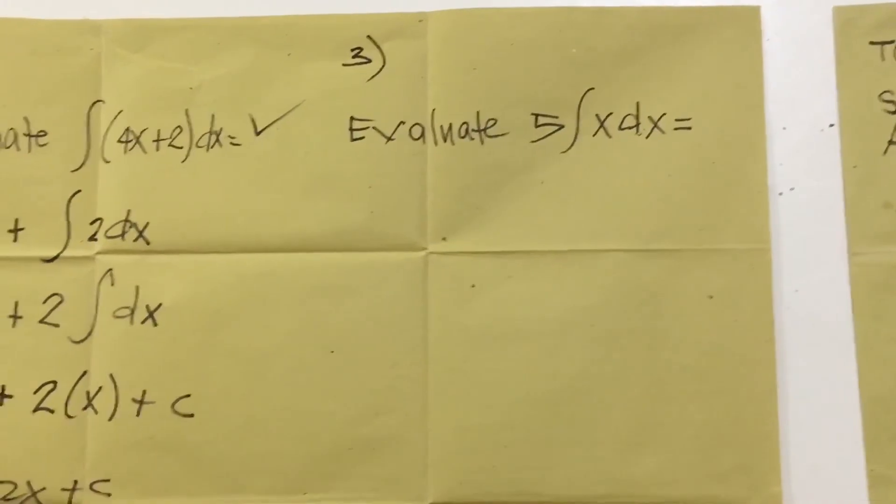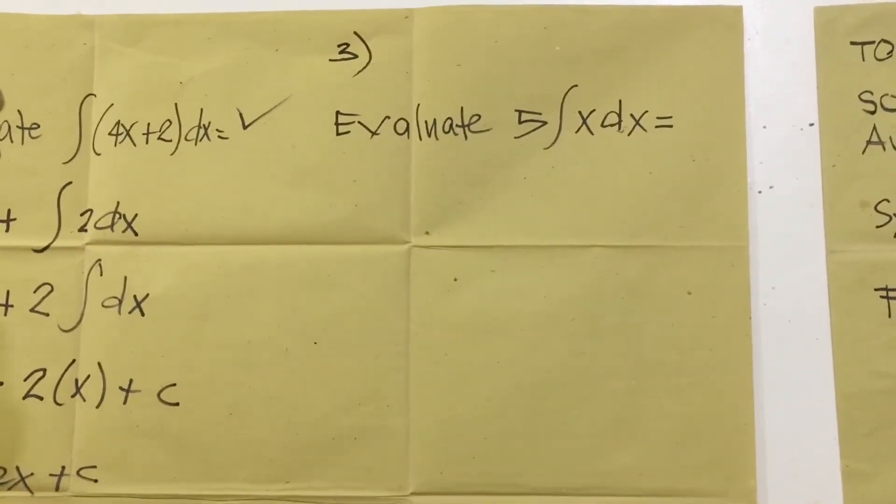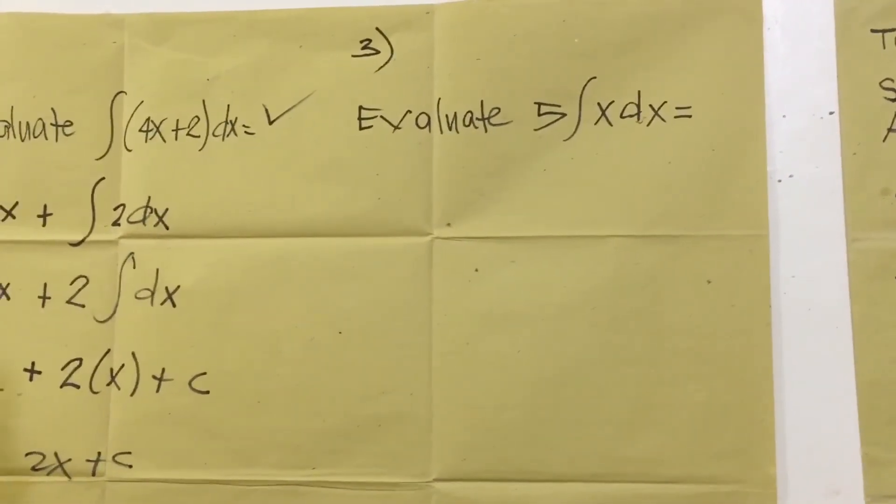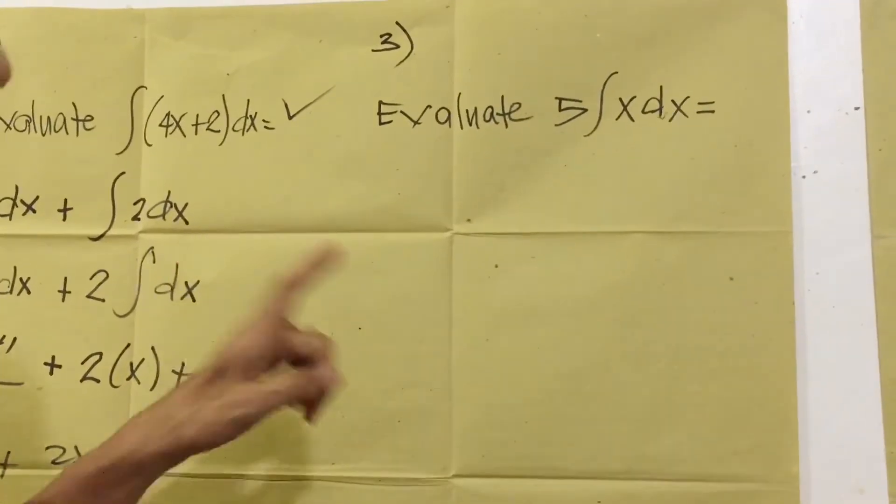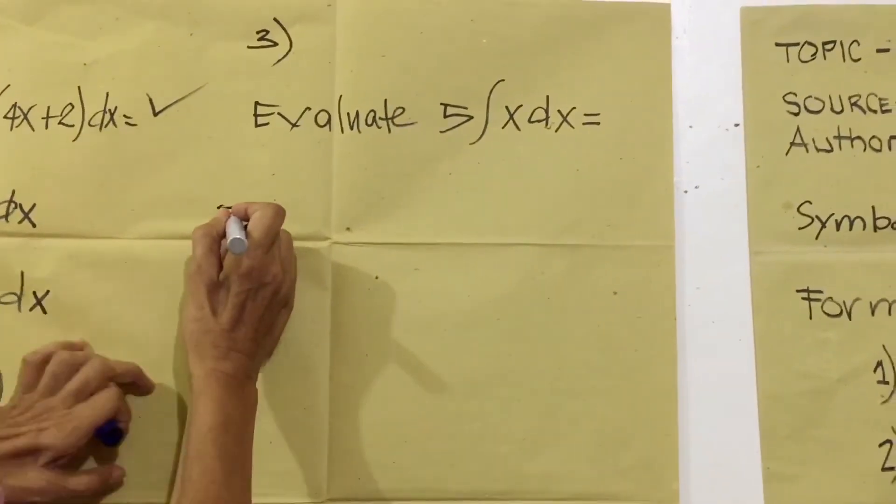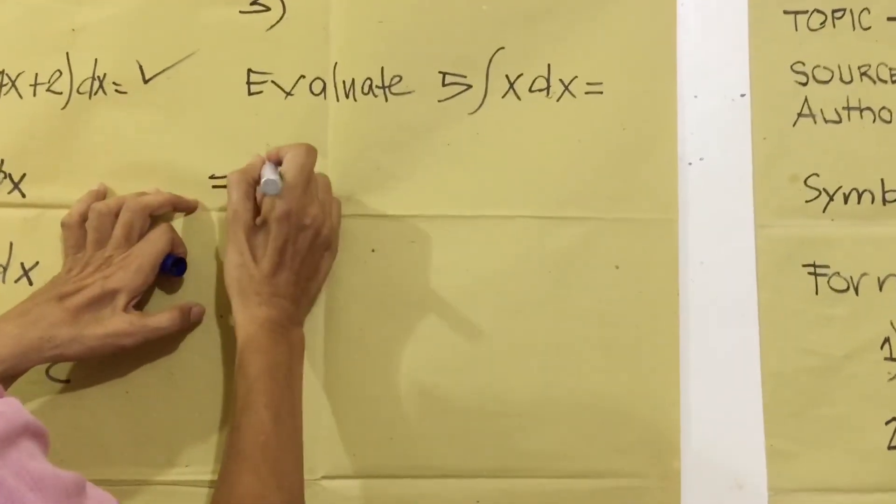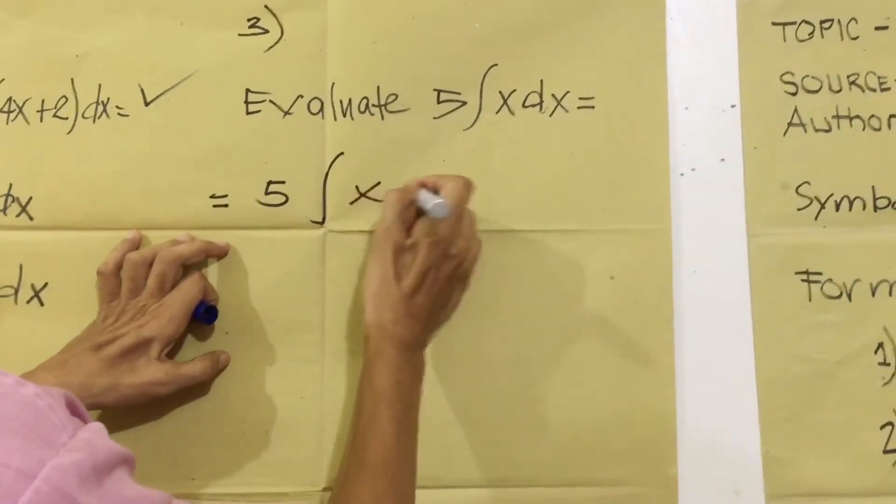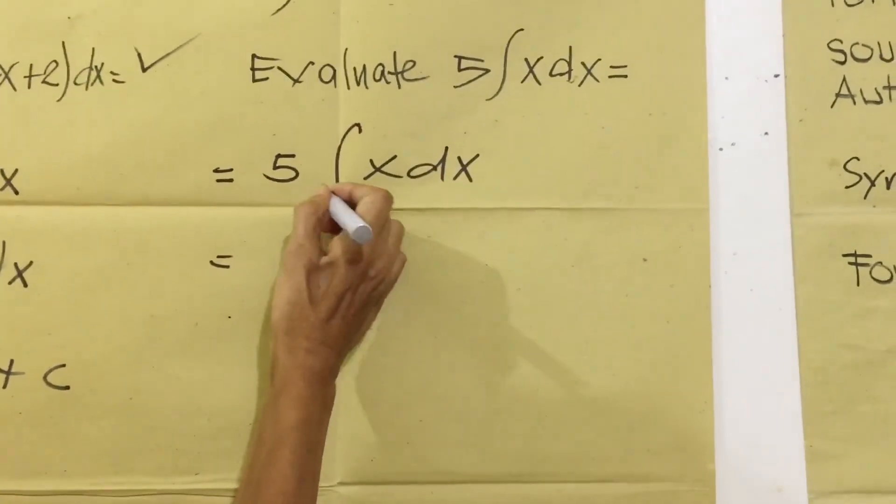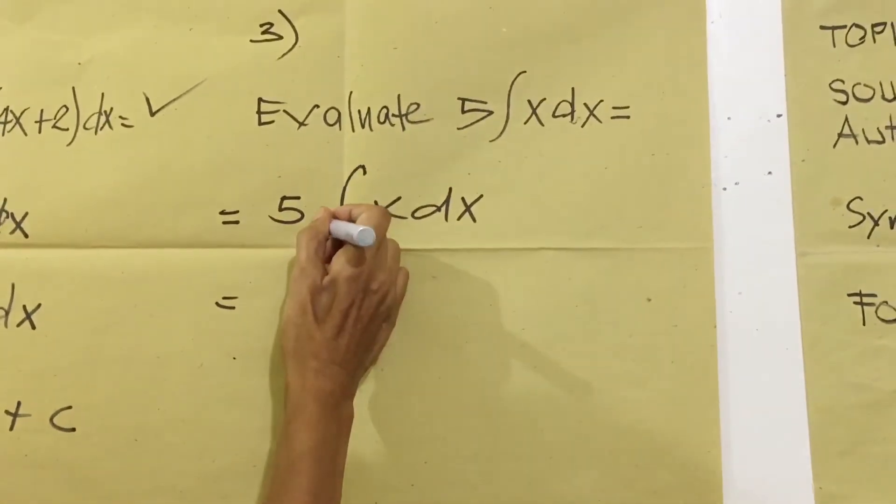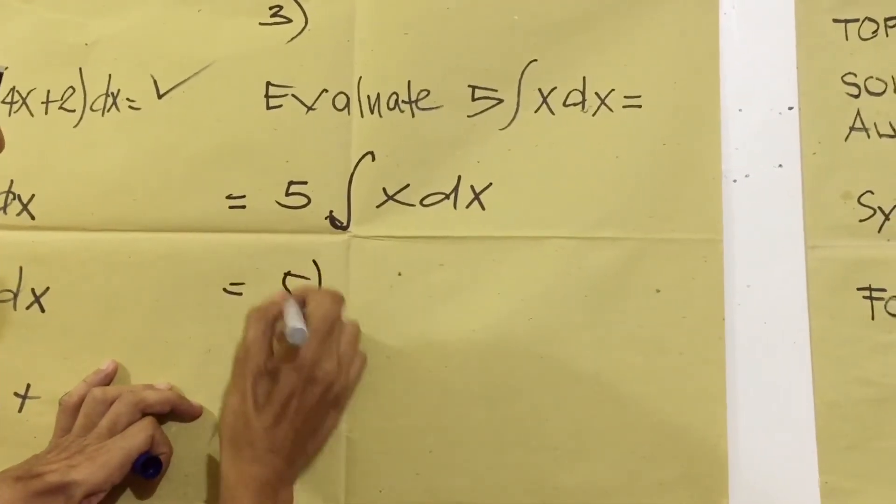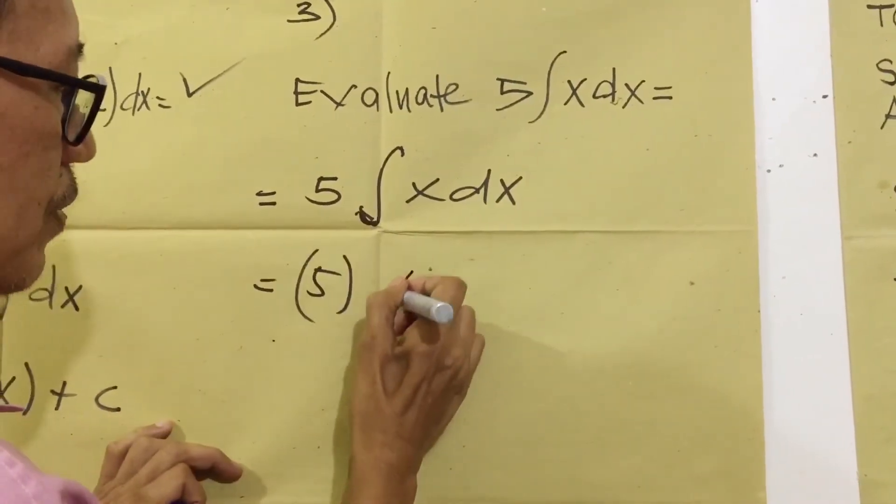Answer number three. Evaluate five integral X DX equals. First, we analyze what formula to use. This time, formula number three. So we will use formula number four. Equals five. Copy first. X DX equals. Formula number four. We need to extract or remove the integral sign. So we multiply five times the value of X.